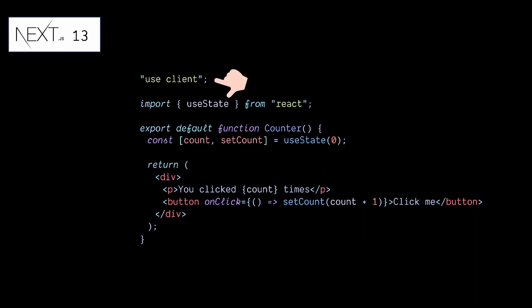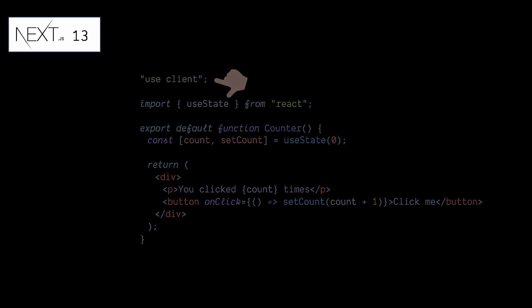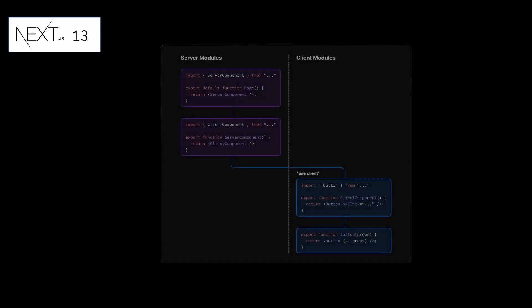The 'use client' directive must be defined at the top of a file, before any imports. 'use client' does not need to be defined in every file. The client module boundary only needs to be defined once at the entry point for all the modules imported into it to be considered client components.